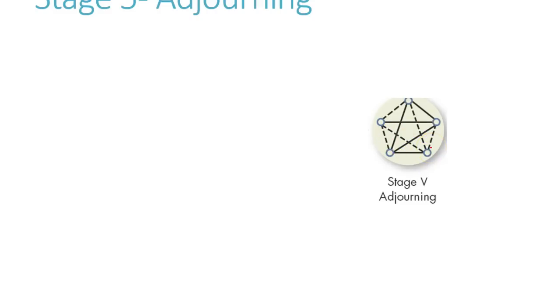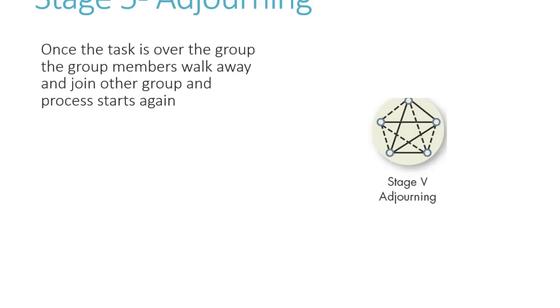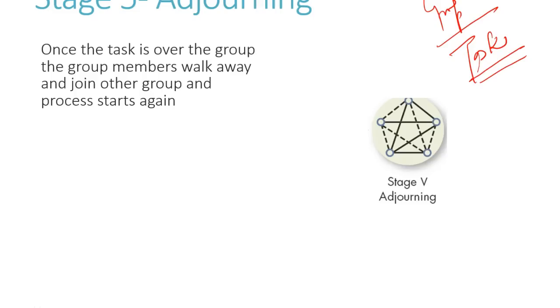In the last stage we have the adjourning stage. Looking at the diagram, the lines are slowly going away — once the job is done and the task the group was working on is complete, the group is dismantled. A simple example: when I was in school I had a good group of 5-7 friends, we studied and played together. But slowly I went to plus 2, someone went elsewhere, someone went to engineering, someone to fashion designing — slowly everyone's group changed, and that group went through the adjourning stage.